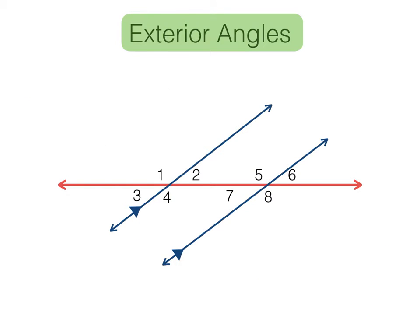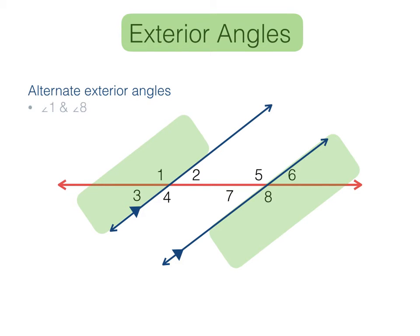There are four angles outside the parallel lines — we call these exterior angles. Alternate exterior angles are on alternating sides of the transversal: one is high, one is low, one is left and one is right. Angles 1 and 8 are alternate exterior angles, as are angles 3 and 6. Alternate exterior angles are congruent; they have the same measure.